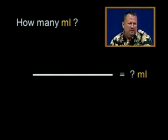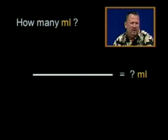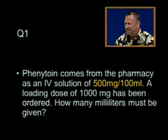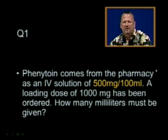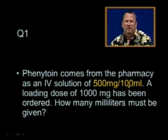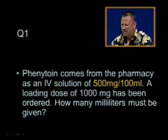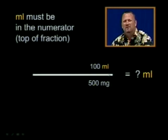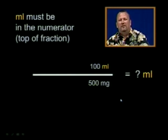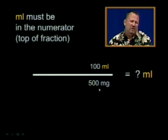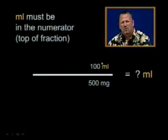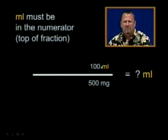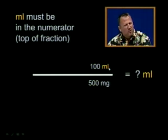So what do we need to do to put milliliters in the numerator? Well, we'll look at the question and find the concentration: 500 milligrams over 100 milliliters — that's what it'll say on the bag from the pharmacy. But we can turn that upside down and put milliliters on top. So now I have 100 milliliters over 500 milligrams, and by placing the 100 milliliters in the numerator, now I have milliliters in the numerator where it belongs.